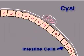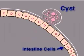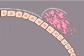Within each tiny cyst, the zygote divides many times. Eventually, the tiny cyst bursts and plasmodia migrate to the mosquito's salivary glands.